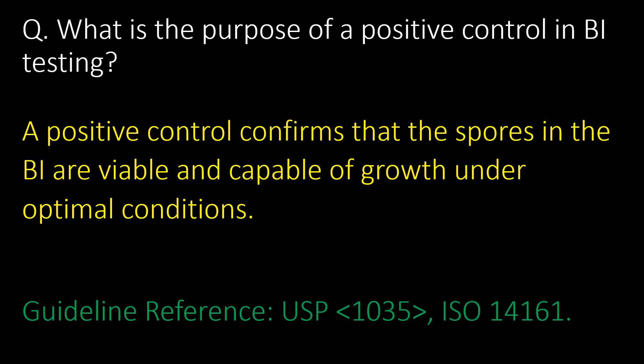What is the purpose of a positive control in biological indicator testing? A positive control confirms that the spores in the biological indicator are viable and capable of growth under optimal conditions. Reference guidelines: USP chapter 1035 and ISO 14161.